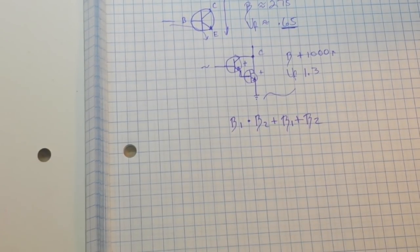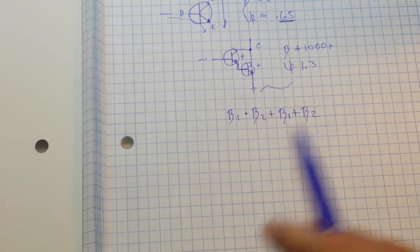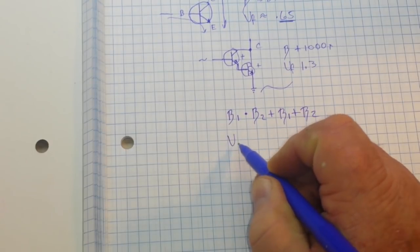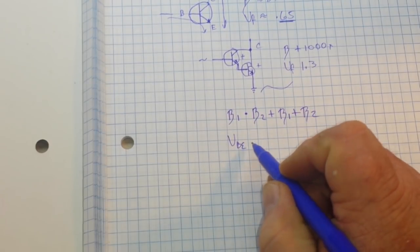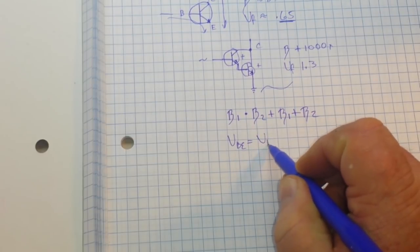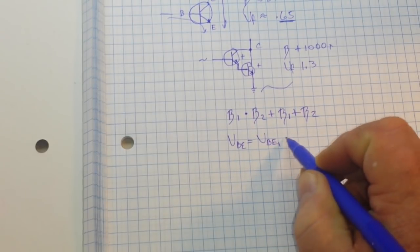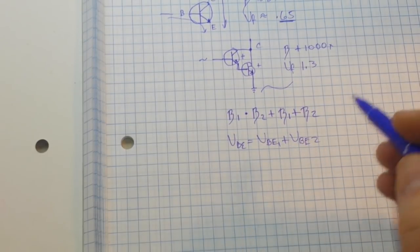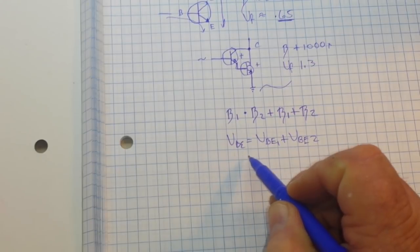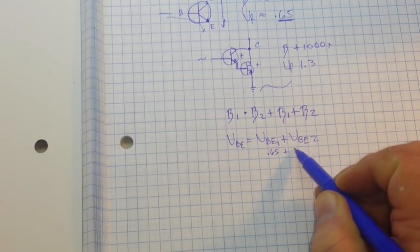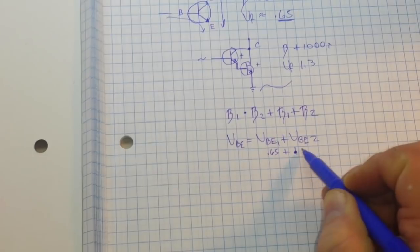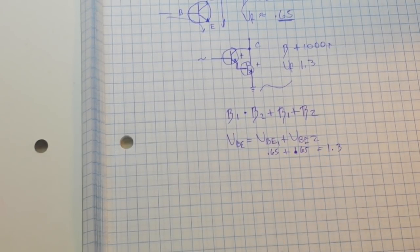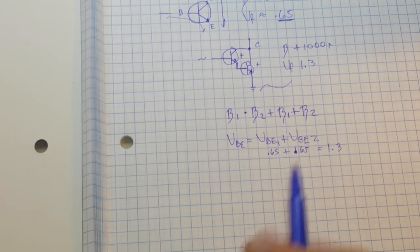For the voltage drop, our V_BE (base-emitter junction) is equal to V_BE1 plus V_BE2. So that's why you see we have 0.65 plus 0.65, and that's going to give us about 1.3 volts.